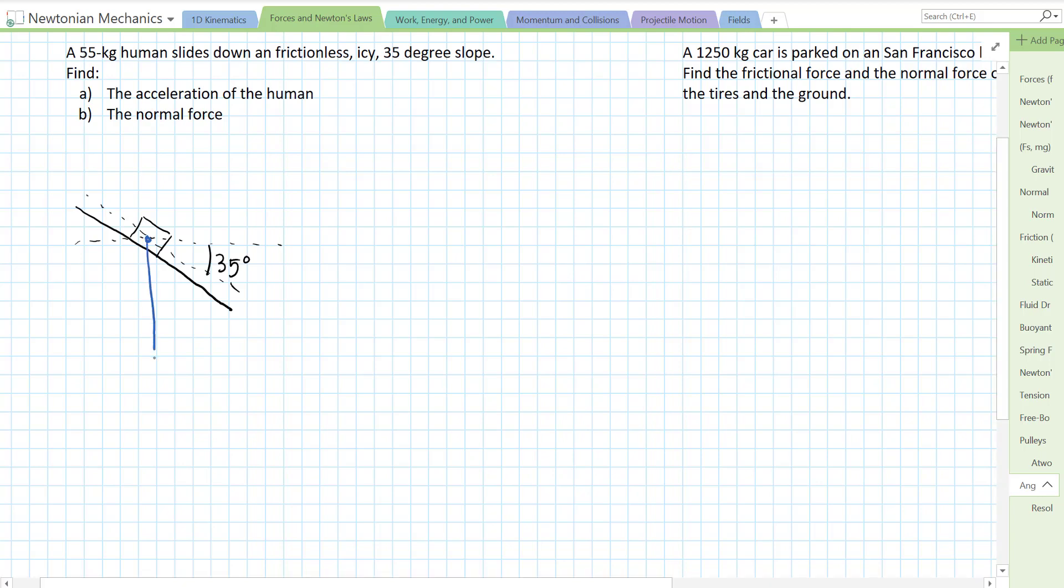Gravity is pulling down, straight down. Let me make that a little straighter. Straight down, and the force of gravity is going to be mg. The normal force points perpendicular to the surface, so it's actually going to point perpendicular to the slope at this angle here. This is our normal force.